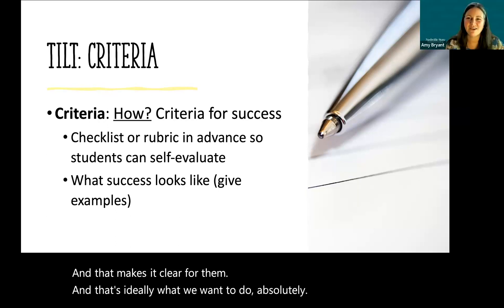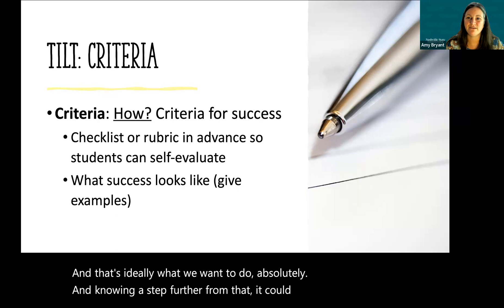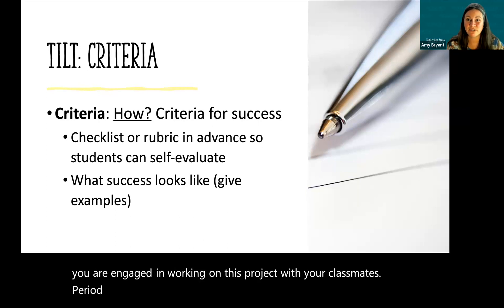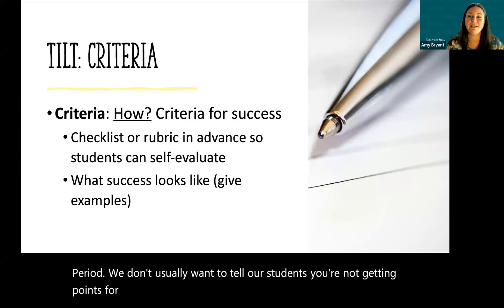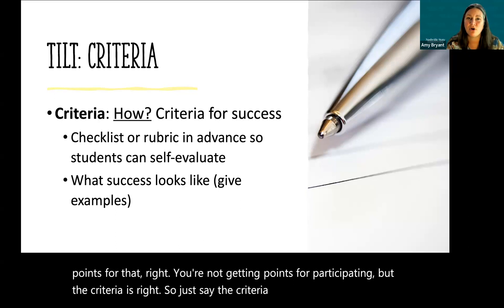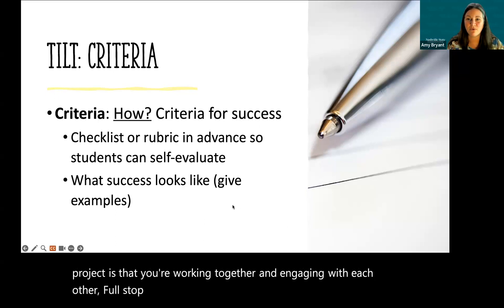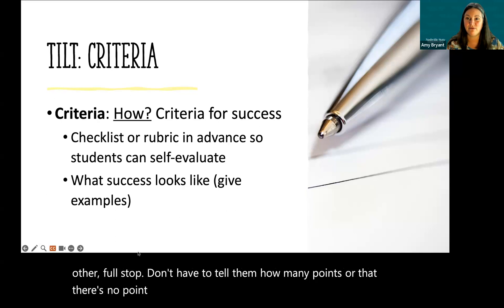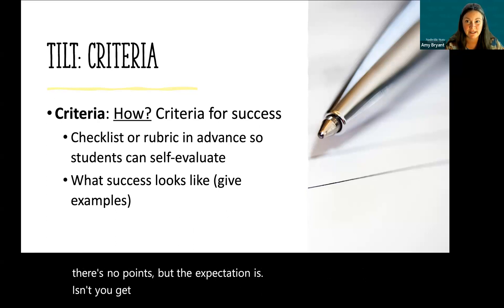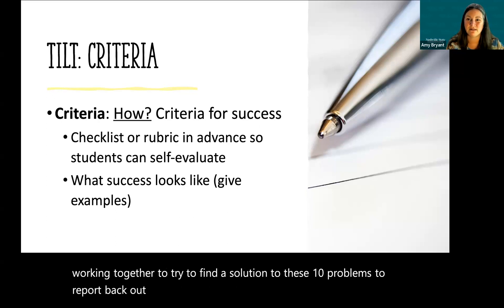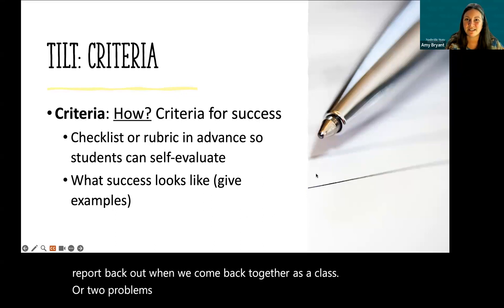Going a step further, the criteria could simply be: you're engaged in working on this project with your classmates — period. We don't usually want to tell students they're not getting points, but the criteria could be that you're working together and engaging with each other. The expectation isn't that you get 10 problems correct — the expectation is you're working together to try to find a solution to these 10 problems to report back when we come back together as a class.